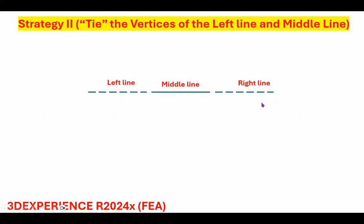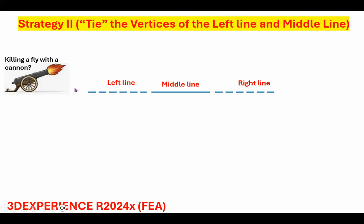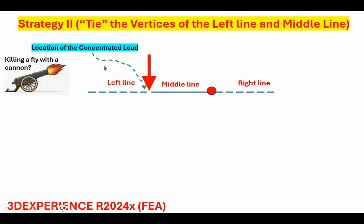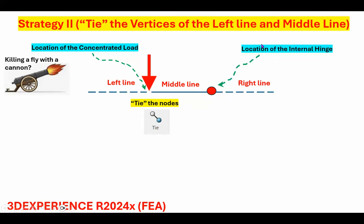Here is the strategy: three lines — left line, middle line, right line. I call this 'killing a fly with a cannon' because there's no reason to do it this way; tutorial 10 would have done it with a single line with the load at the middle, but I want to go through all these different things that can be done. The concentrated load goes here, the hinge goes there, and we're going to use the tie node rather than a connector. This will be done with the hinge connector. I've done hinge, join, and cylindrical in tutorial 10, but here I'm only going to do hinge.